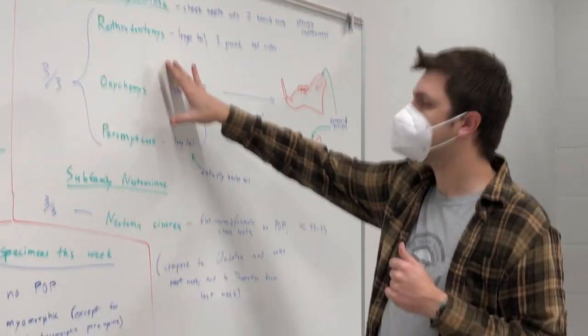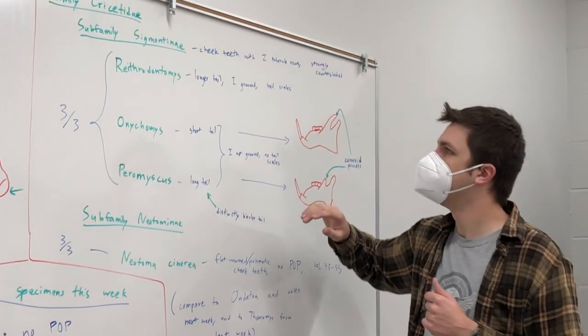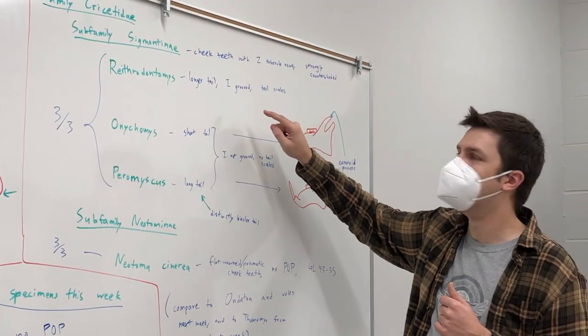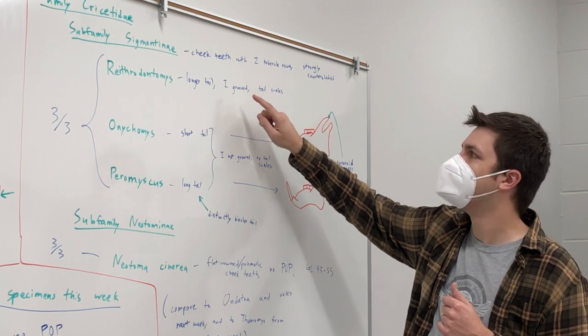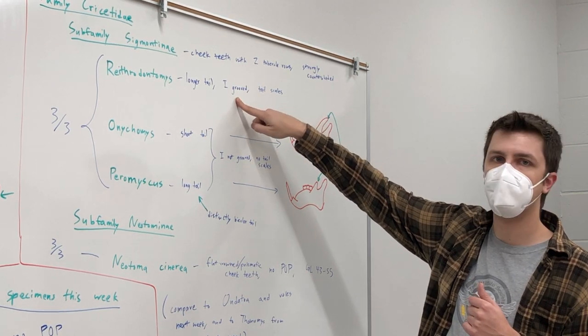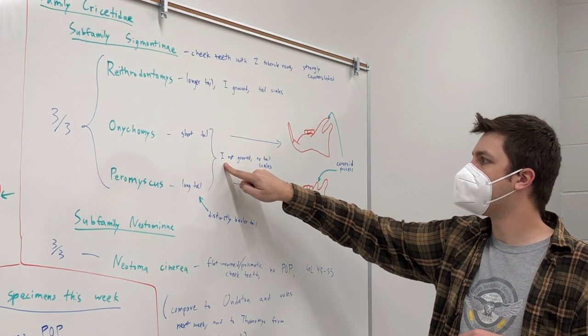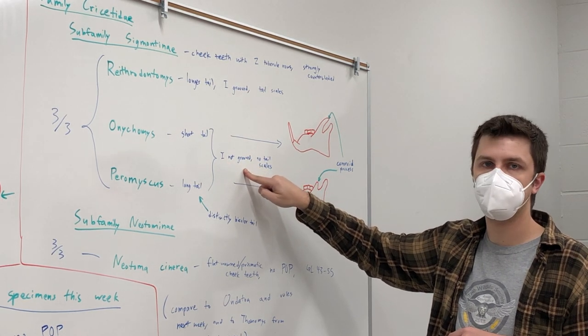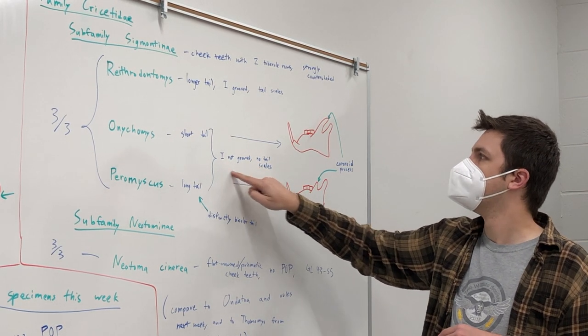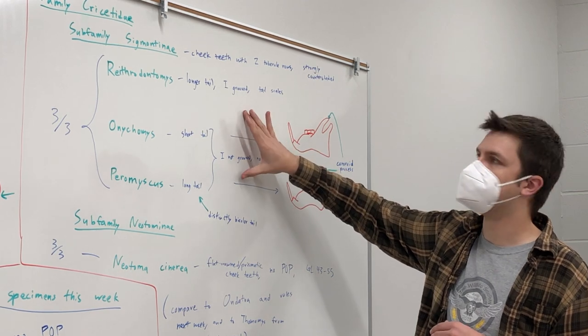All right, so talking about the skins for these, for the skulls then, the harvest mouse has a grooved incisor, which I mentioned before in the other video, versus these other two do not have a grooved incisor.